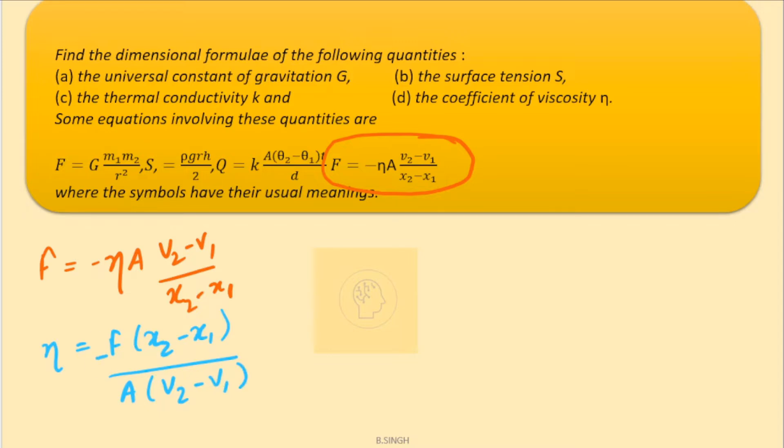Let us keep the negative sign, though the negative sign will not take part in the dimensions. So, let us rewrite our dimensions for force. Force will be equals to M1 L1 T minus 2. This is the dimensions of force.